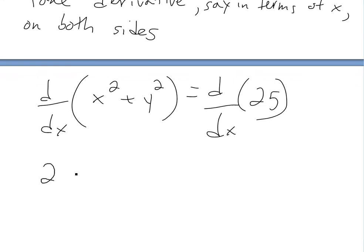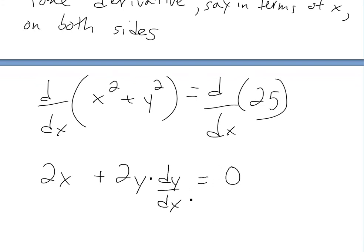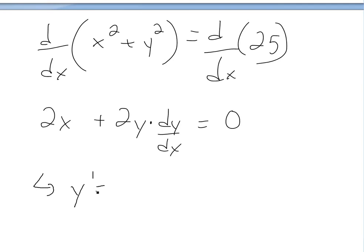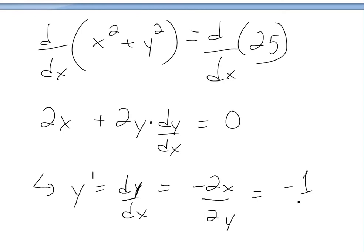Taking the derivative — using the power rule (see the links below for these rules) — the derivative of x squared is just 2x. Then, using chain rule and power rule on y squared, we get 2y times dy/dx. The derivative of the constant 25 is just 0. Rearranging, we get y prime equals dy/dx equals negative 2x over 2y, which equals negative x over y — the 2's cancel.